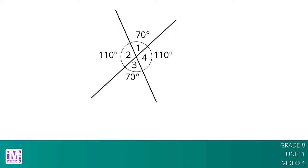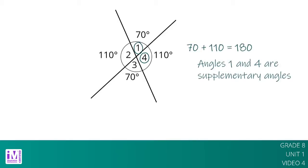When two lines intersect, vertical angles are equal and adjacent angles are supplementary — that is, their measures sum to 180. For example, in this figure, angles 1 and 3 are equal and angles 2 and 4 are equal. It is also true that angles 1 and 4 are supplementary, that is, their sum is 180 degrees. And angles 2 and 3 are also supplementary.